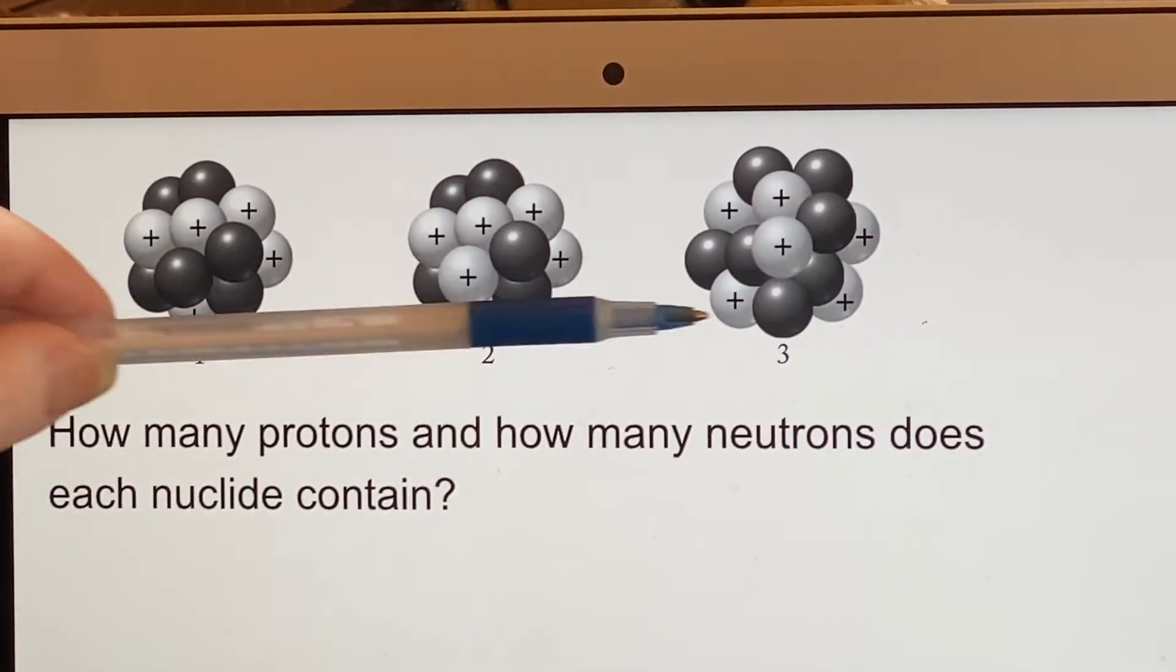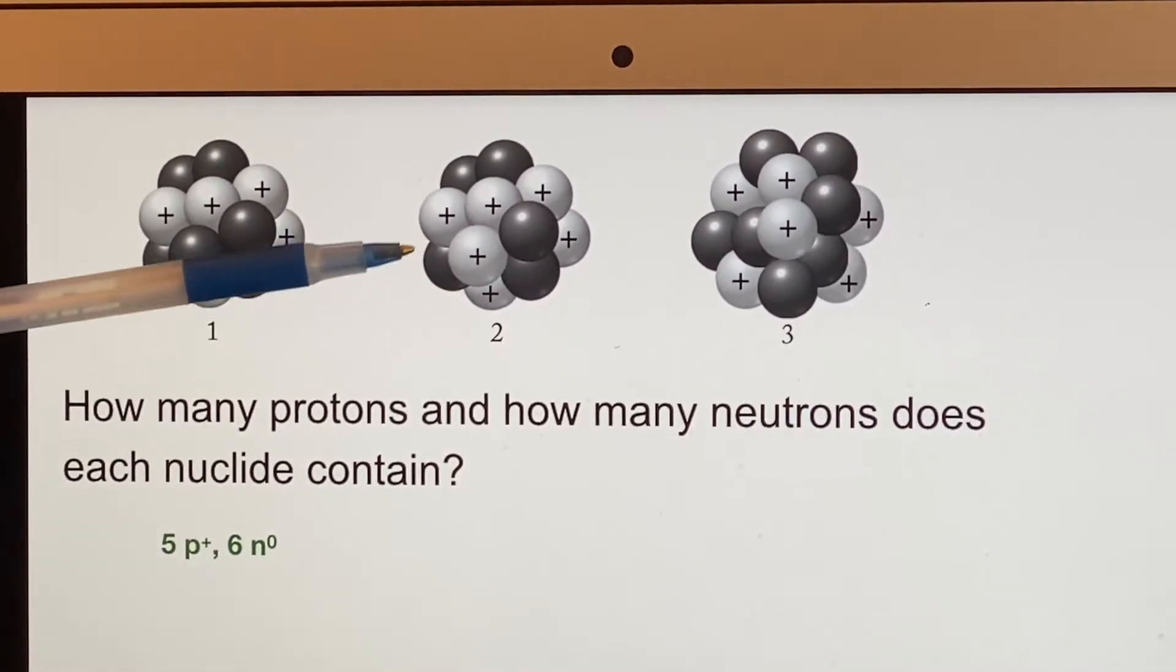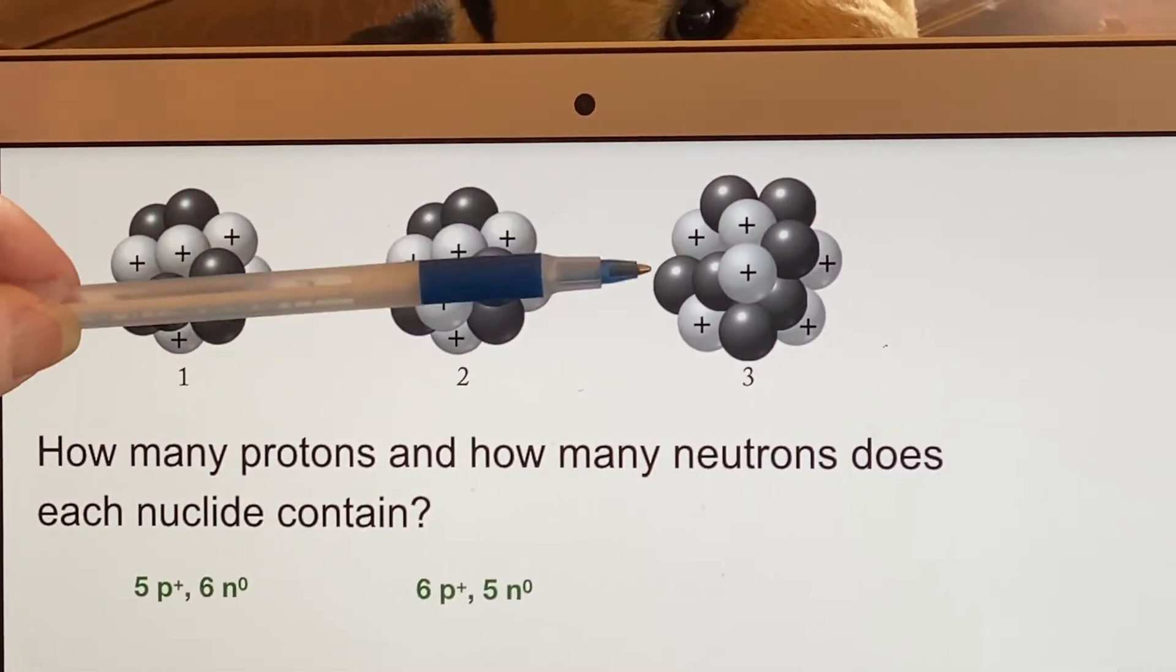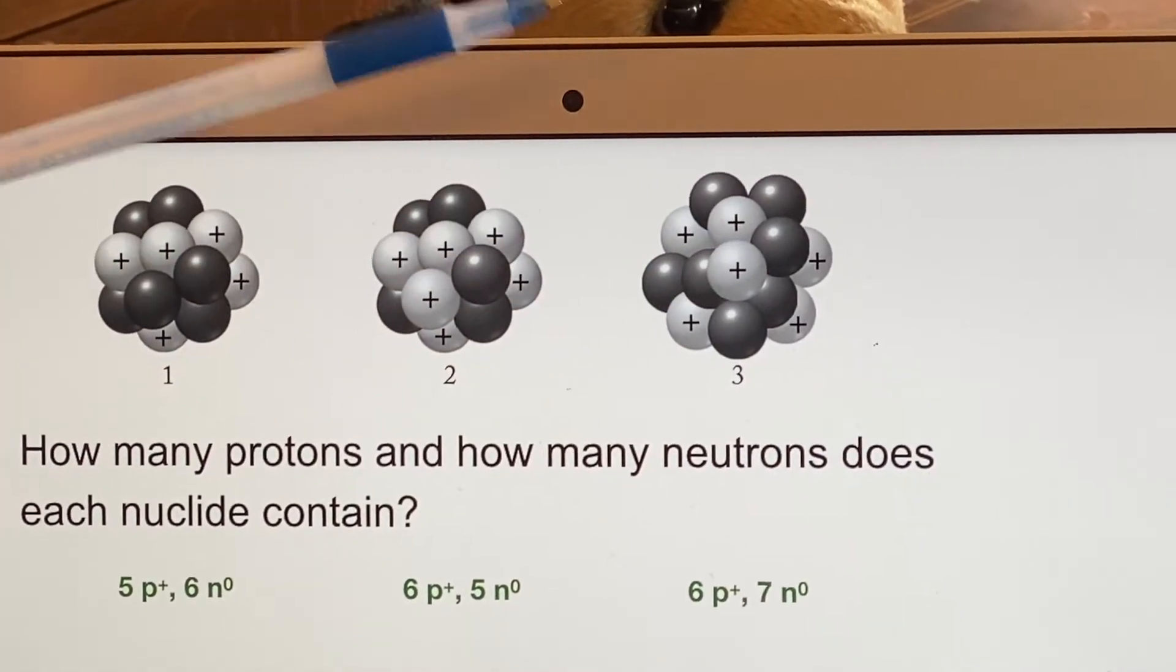If you go through and do that with each of these, you're going to see five protons, six neutrons. Now we're going to have six protons and only five neutrons. And then what looks like six, one, two, three, four, five, six, seven neutrons.